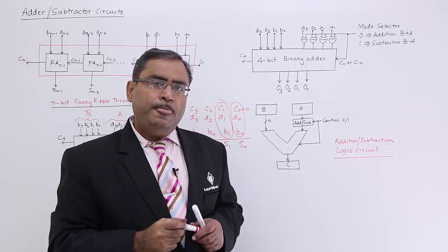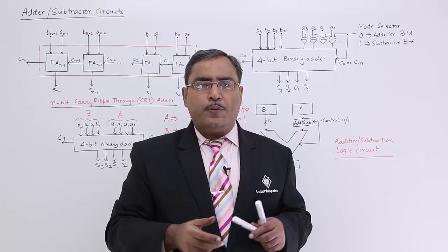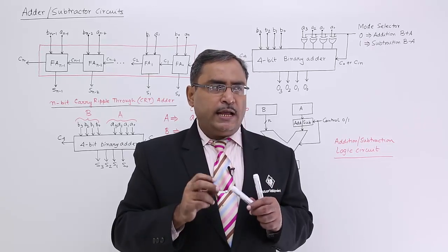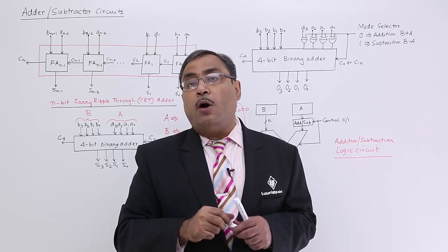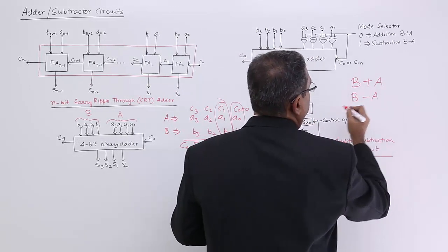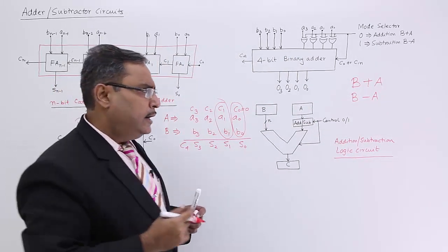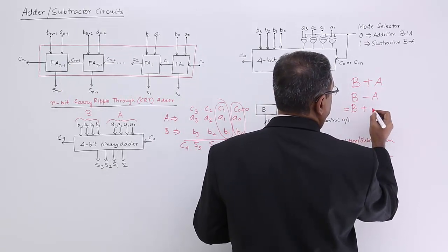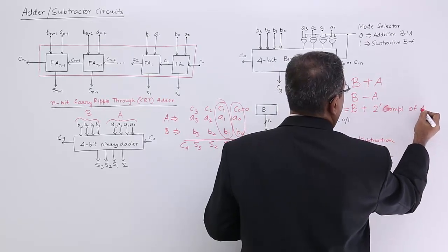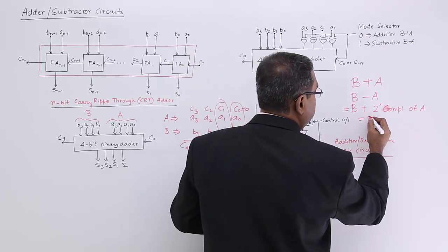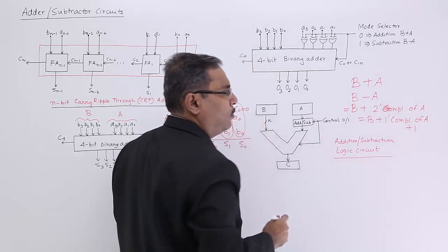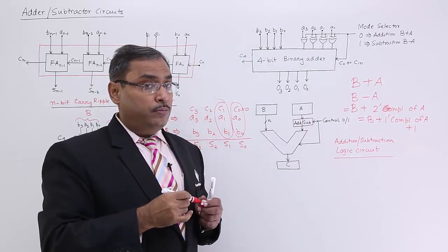Now, let us suppose a question has come: how can the same circuit be operated for both addition and subtraction? That is a very interesting question. I am going to perform addition and subtraction through the same circuit. I want to do B plus A and also B minus A using the same circuit. B minus A is nothing but B plus the 2's complement of A, which means B plus the 1's complement of A plus 1.